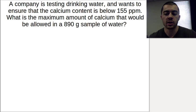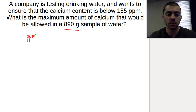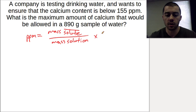Now we have a company testing drinking water, and they want to ensure the calcium content is below 155 parts per million. What is the maximum amount of calcium that would be allowed in an 890 gram sample of water? We'll use the parts per million formula. We're solving for the mass of calcium. Parts per million equals mass of solute over mass of solution times 1 million.